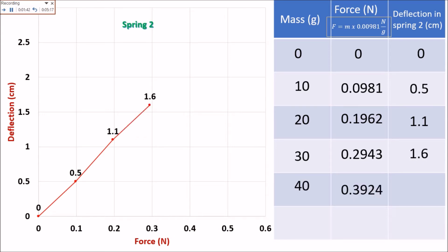For the mass of 40 grams, we have 0.3924 newton, with a deflection of 2.1 centimeters. And for 50 grams, we have 0.4905, and the deflection is 2.6 centimeters.